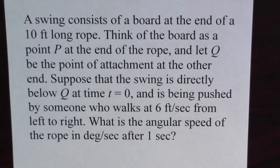Now suppose the swing is directly below Q at time t equals zero, and is being pushed by someone who walks at six feet per second from left to right. What is the angular speed of the rope in degrees per second after one second?